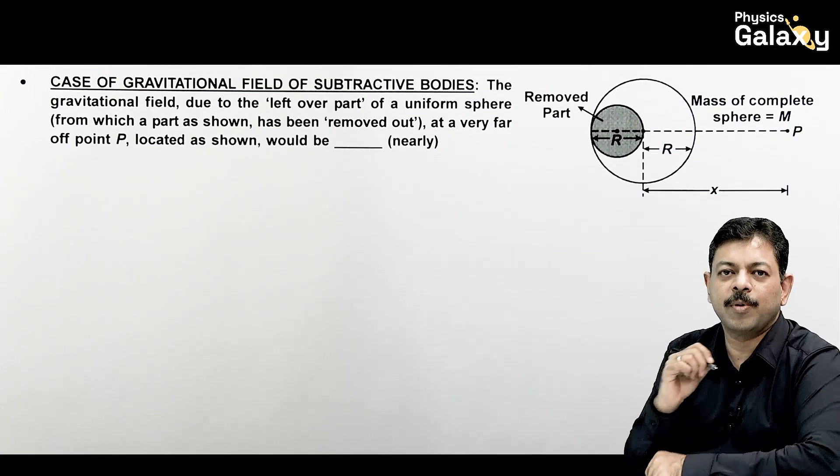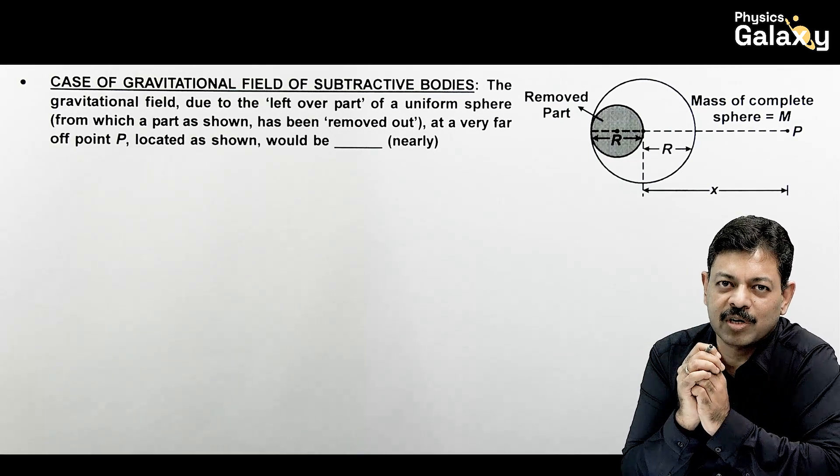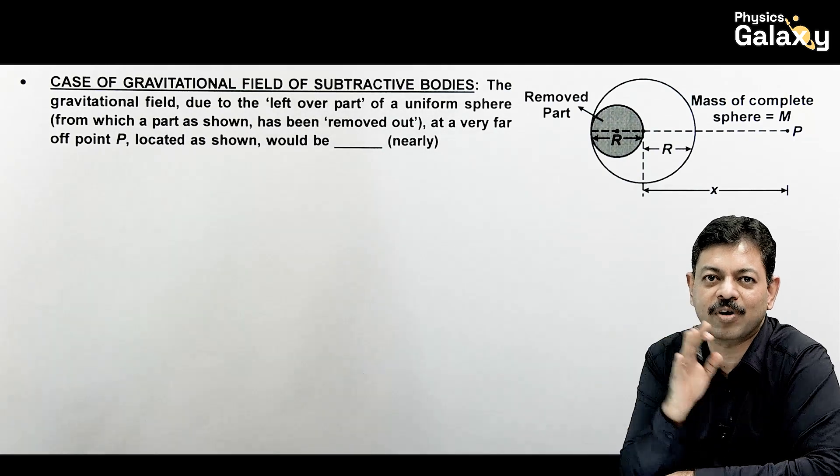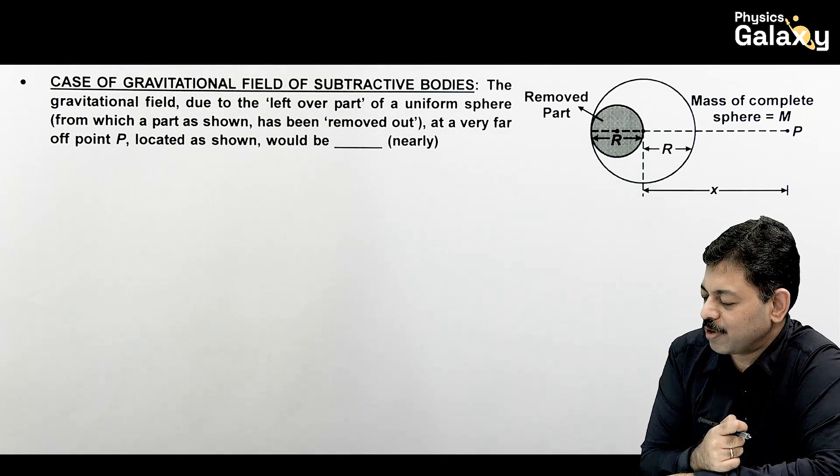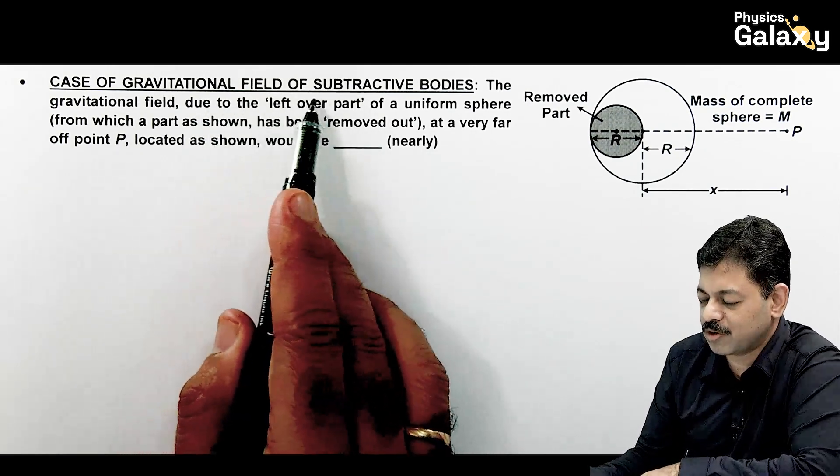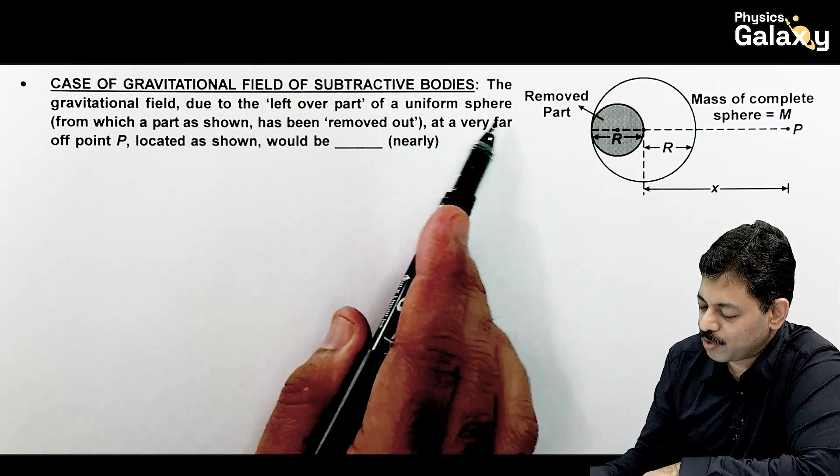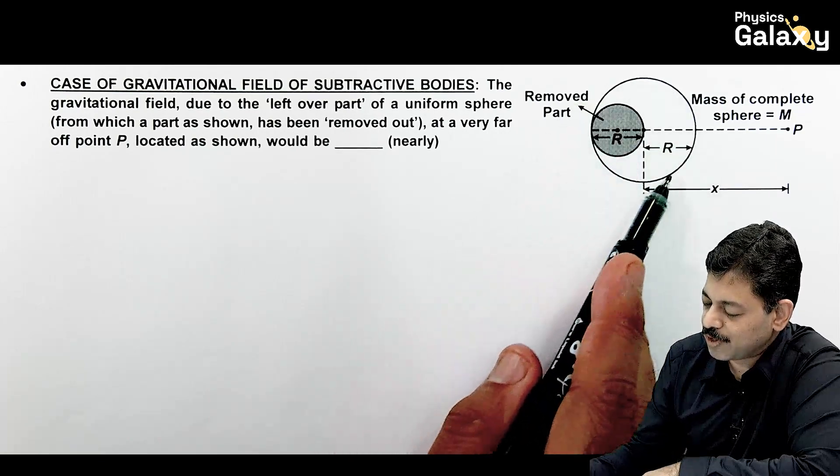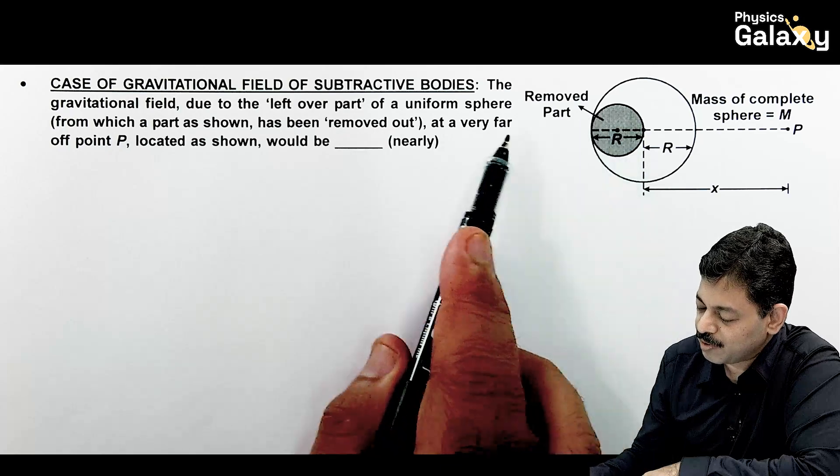Some students will have such cases where at a point, gravitational field of an object, and some part of that object is removed. So what should be the gravitational field after removal of one part? That can be obtained simply by subtracting the gravitational field of removed part. This is called gravitational field of subtractive bodies. So here it says, the gravitational field due to the leftover part of a uniform sphere, of which one part has been removed. Initially the sphere was of radius R, which means that R by 2 radius is removed.